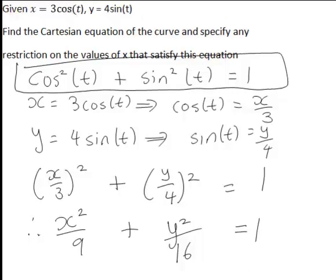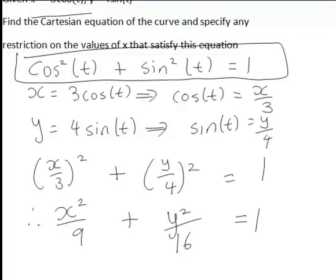Now the question is are there any restrictions on the value X can take? X was equal to 3 cos t and cos t always takes values between negative 1 and 1. Therefore 3 cos t for X must always take values between negative 3 and 3.